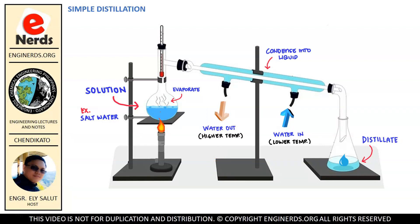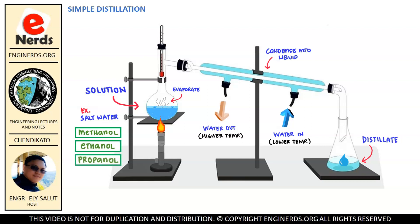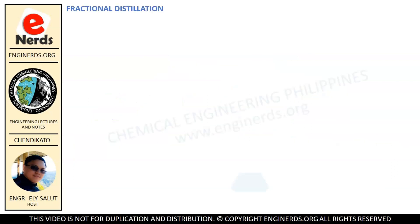But what will happen if our solution contains different types of liquids and we want to separate them from one another? Let's say we have methanol, ethanol, and propanol in our solution. How are we going to separate them? Obviously, it will not be easy using this simple distillation process, and that is why we have to use a fractional distillation process in that case.